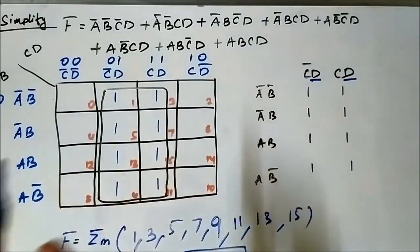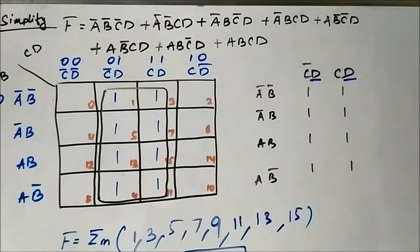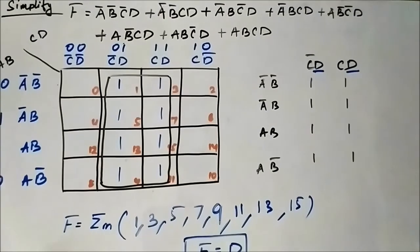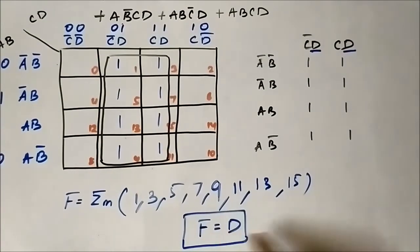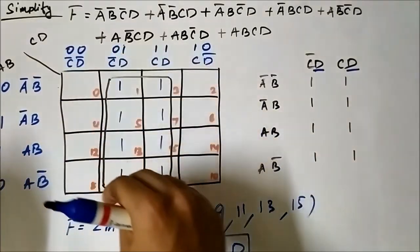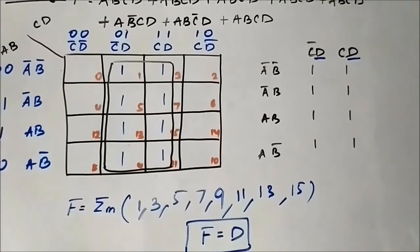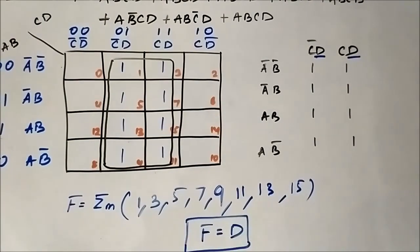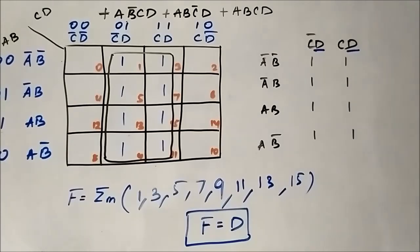It would take a lot of time to simplify this using basic boolean reduction rules, but using the K-map we got the simplified boolean expression in just a few minutes. So the steps are: have the K-map format ready, form the groups as per the rules, identify the common variables — that is the tricky part — and you will get the simplified boolean expression. Here f = D is the final simplified expression.